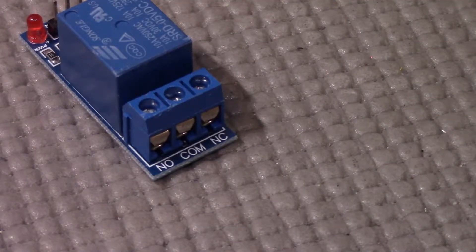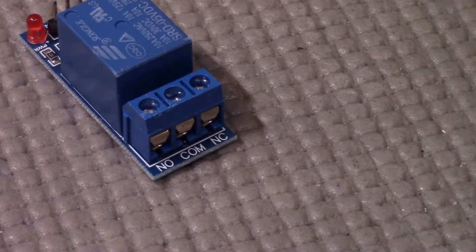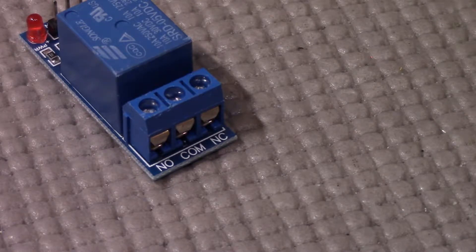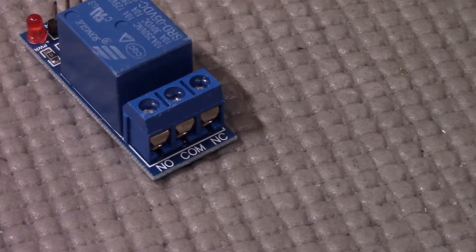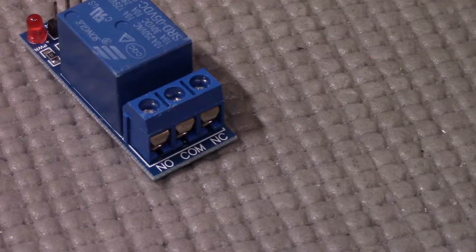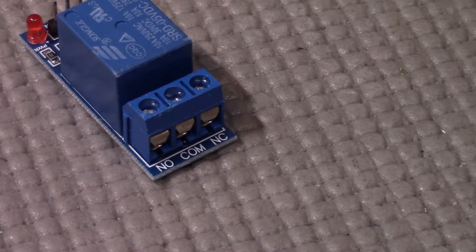The opposite side of the relay has three connections as well, and these are NO for normally open, COM for common, and NC for normally closed.